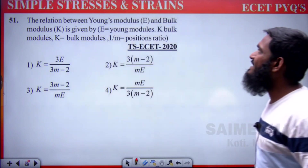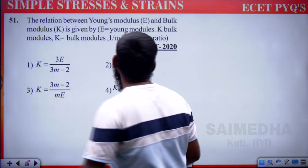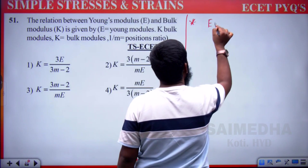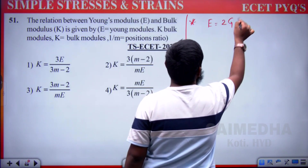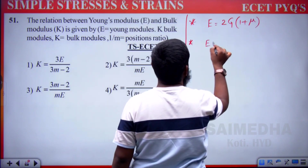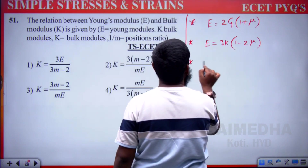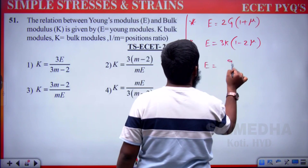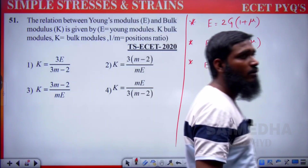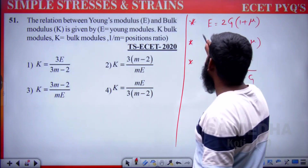Relation between Young's modulus, Bulk modulus, and Poisson's ratio. Three standard relations: E = 2G(1+μ), E = 3K(1−2μ), and E = 9KG/(3K+G). The question asks about the relation between E and K.